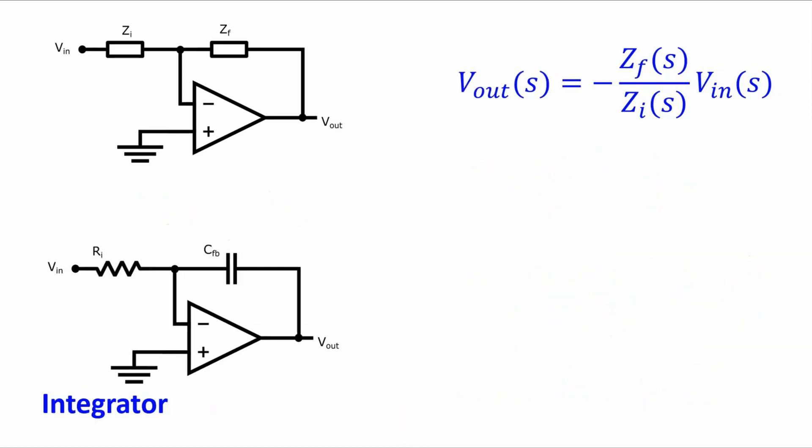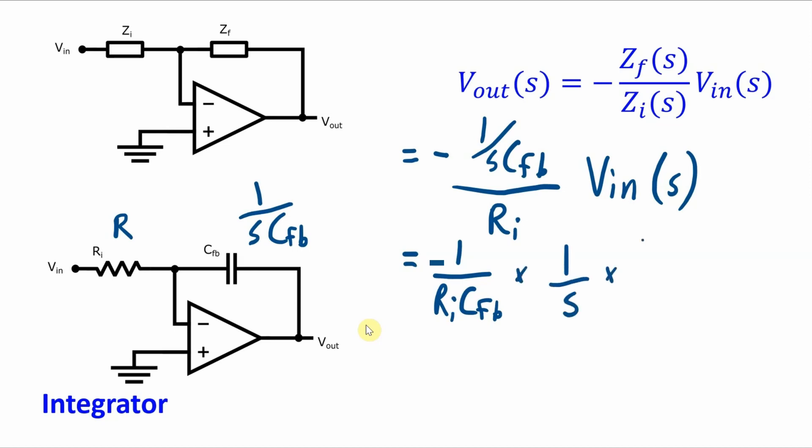Now let's do the same thing for the integrator circuit. For the integrator the input impedance is simply this r value and the feedback impedance since it is a capacitor, this is 1 over sc, so this Vout in the s domain is negative 1 over scfb over r times Vin, and I'm going to rewrite this as 1 over rcfb, I guess this is ri isn't it, times 1 over s times Vin of s.